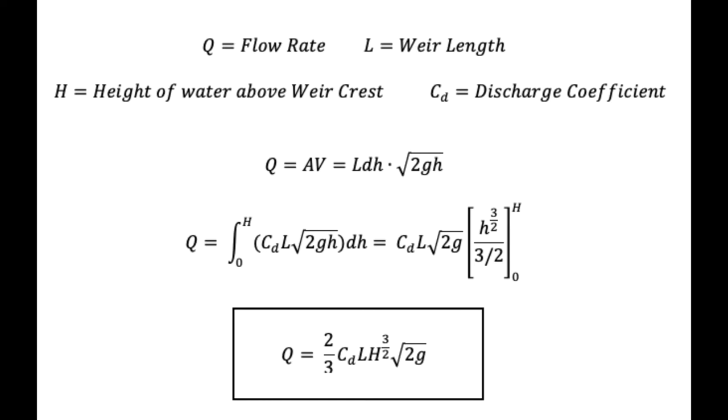The total flow rate is equal to the integral from 0 to height H above the weir of this product multiplied by the coefficient of discharge, which is included to factor in various imperfections and losses.